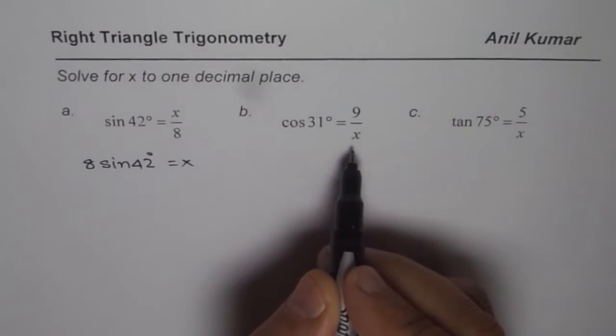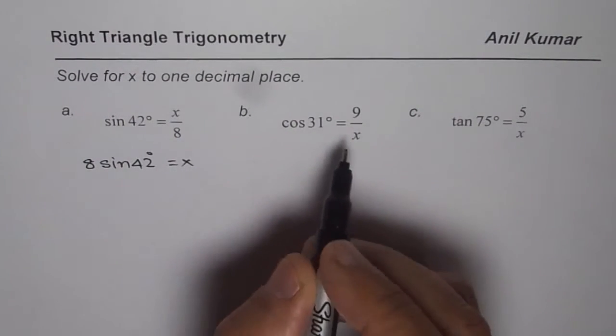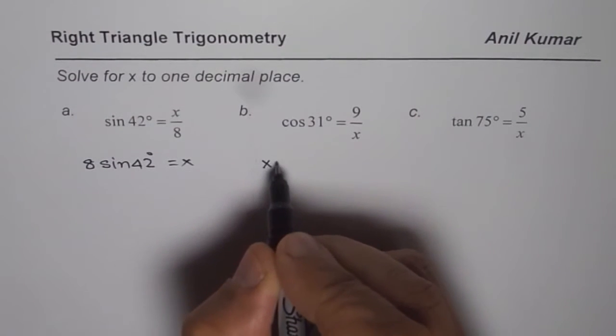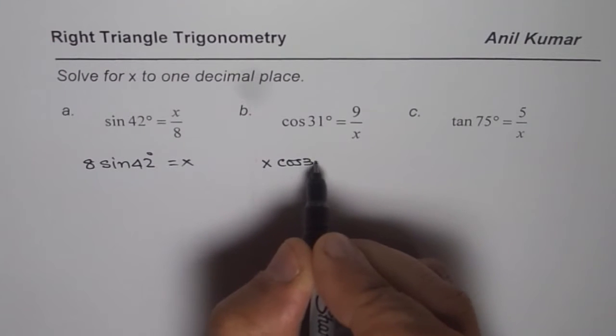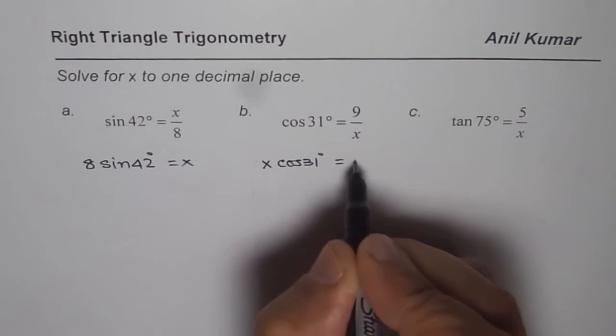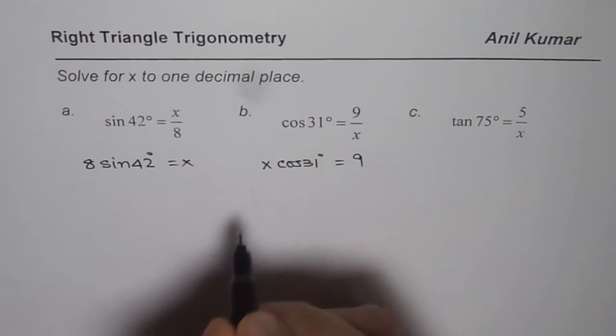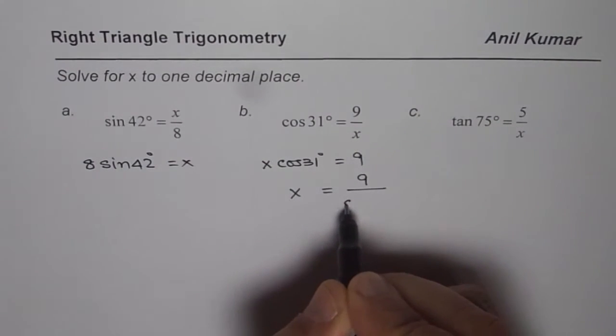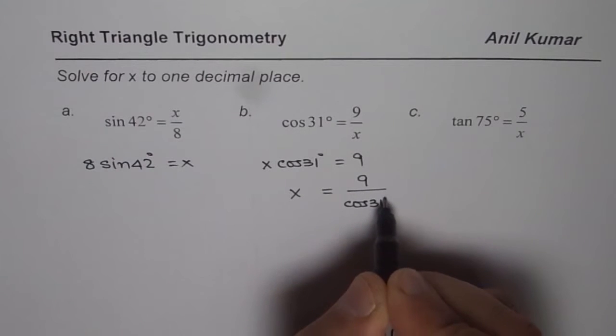In this particular case, you need to find x. So what you should do is cross multiply. When you cross multiply, first step could be x cos 31 degrees equals to 9. Since you want to find x, you can write this as x equals to 9 divided by cos of 31 degrees.